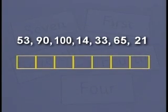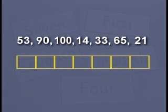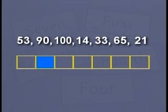Here are a set of numbers and a set of boxes. I would like you to help me put the numbers into the boxes according to ordinal numbers. Let's start by putting 53 into the second box from your left. From your left, the second box will be box number 2 — that's 1, 2. So we put 53 into the second box from your left.